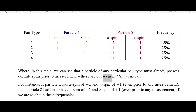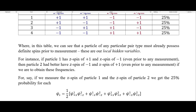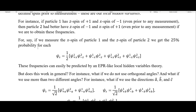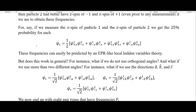A lot of people and very prominent physicists seem to think that Bell's theorem rules out any sort of hidden variables theory, but it really only rules out local hidden variables. So if particle one has a z-spin of plus one and x-spin of minus one even prior to any measurement, then particle two must have a z-spin of minus one and x-spin of plus one even prior to measurement, if we are to obtain these frequencies. For instance, if we measure the x-spin of particle one and the z-spin of particle two, we get a 25 percent probability for each. These frequencies can easily be predicted by an EPR-like local hidden variables theory. But does this work in general?